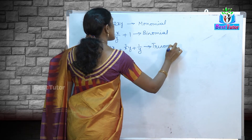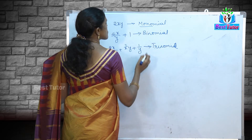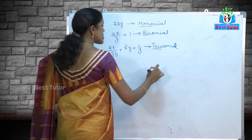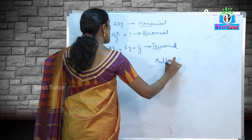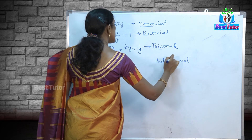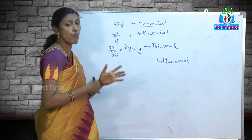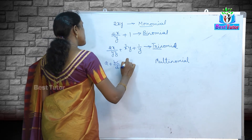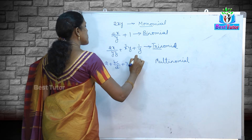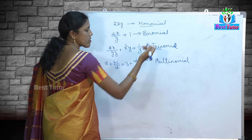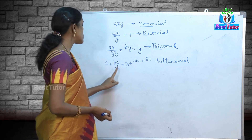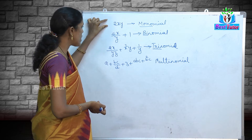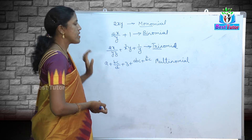Mono means single term, bi means 2 terms, tri means 3 terms, and more than 3 terms is going to be called a multinomial. An algebraic expression which consists of more than 3 terms is called a multinomial — like a + b + c/d + 3 + abc + b²c and so on. This multinomial has 1, 2, 3, 4, 5 terms. So we have learnt about monomial, binomial, trinomial, and multinomial.